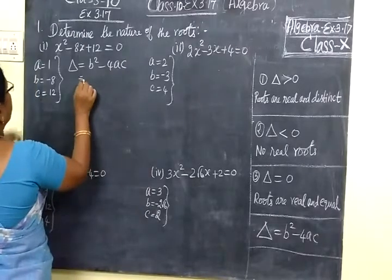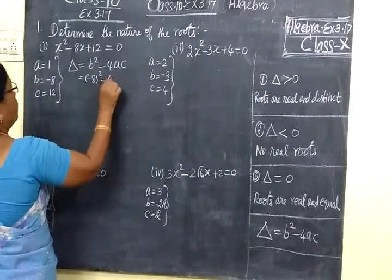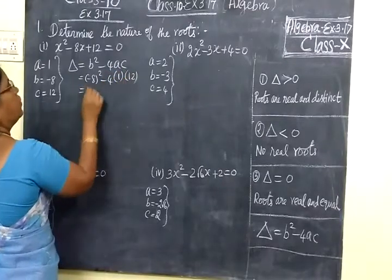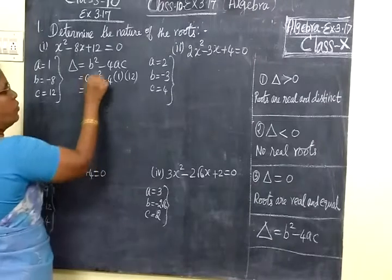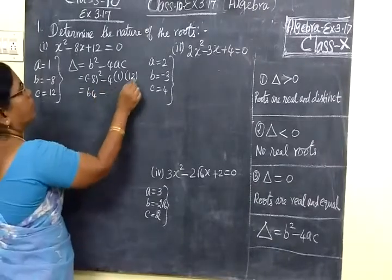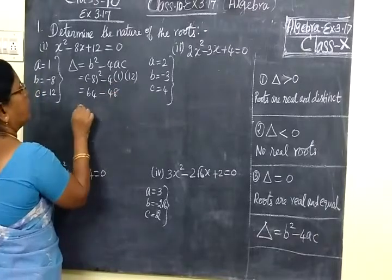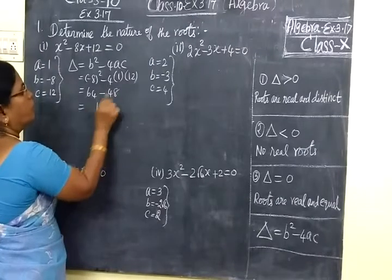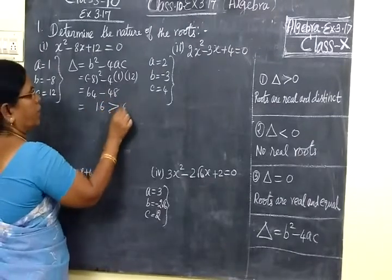Here, Δ equals (-8)² minus 4 into 1 into 12. So this equals 64 minus 48, which equals 16. So this is greater than 0.